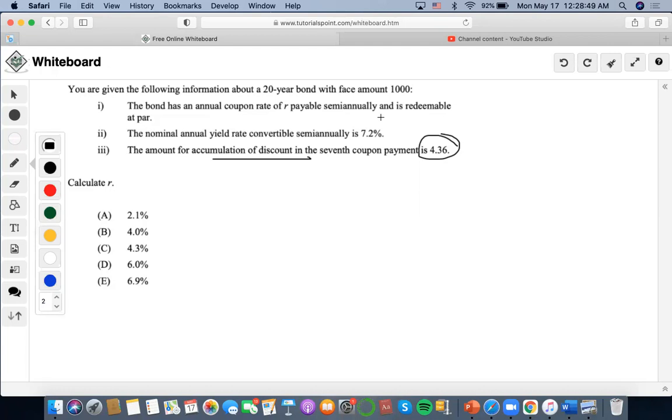So now, if the seventh coupon... what time does the seventh coupon occur? Well, I would do 40 minus 7, and I'll get 33, right?